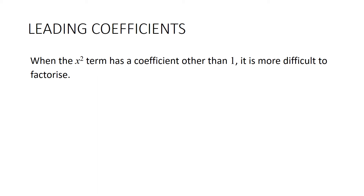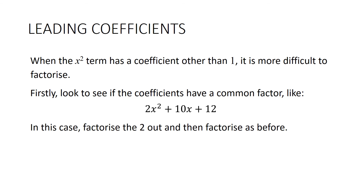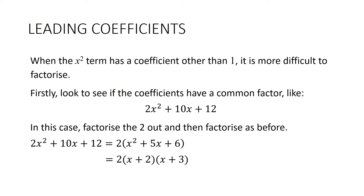When the x² term has a coefficient other than 1, it is more difficult to factorise. First, check if the coefficients have a common factor — for example 2x² + 10x + 12: 2 goes into all of those, so factorise out the 2 to get 2(x² + 5x + 6), and we know that's 2(x + 2)(x + 3). If there's a common factor, that saves a lot of time.